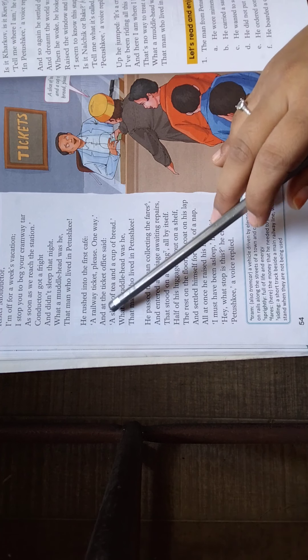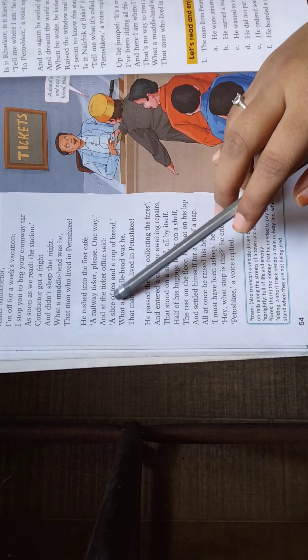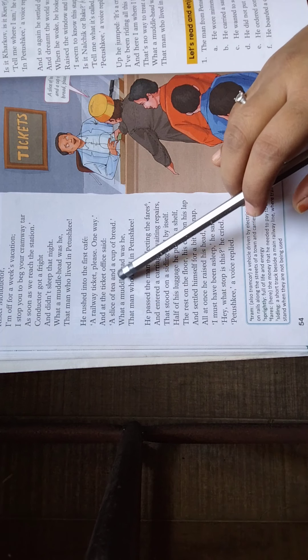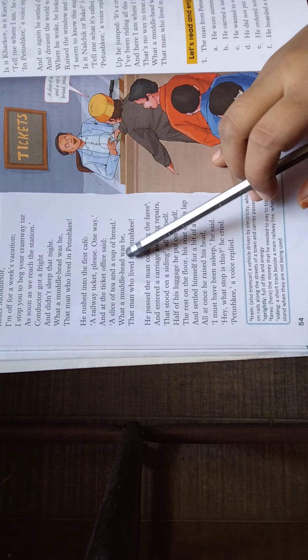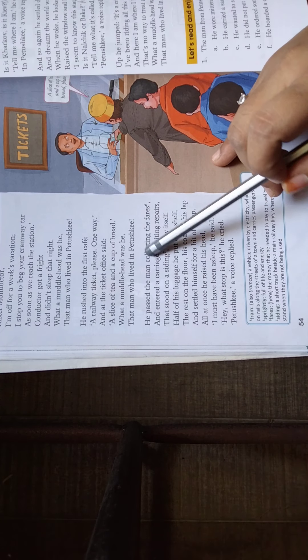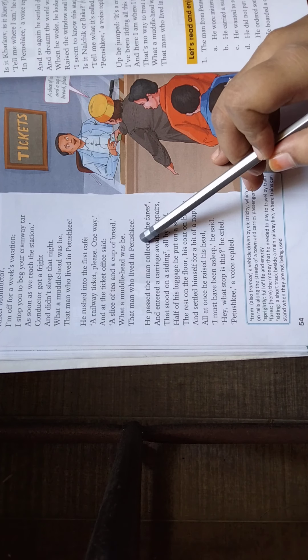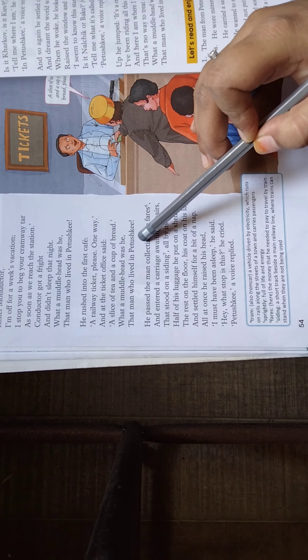He rushed into the first cafe. A railway ticket please, one way. And at the ticket office said, a slice of tea and a cup of bread. What a muddle-head was he, that man who lived in Itissko. क्या बोला? वो टिकेट लेने जाता है.